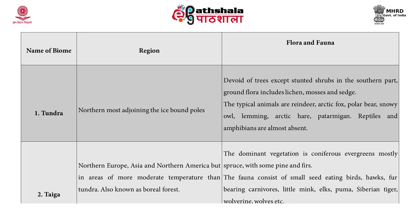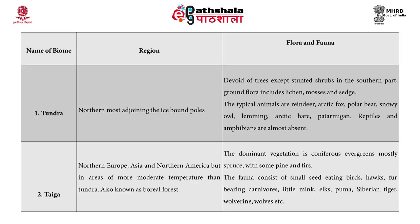Biome taiga: found in northern Europe, Asia, and northern America, in areas of more moderate temperature than the tundra; also known as the boreal forest. The dominant vegetation is coniferous evergreen, mostly spruce with some pine and firs. The fauna consists of small seed-eating birds, hawks, fur-bearing carnivores, little minks, elks, puma, Siberian tigers, wolverines, wolves, etc.